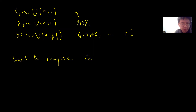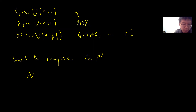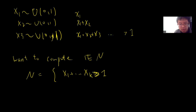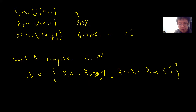So I can define a random variable — let's call it N. N is defined so that up to index k the sum is greater than or equal to 1, but the sum up to k minus 1 is still less than or equal to 1. Both conditions are satisfied, and this random variable is k. We want the expectation value of N.